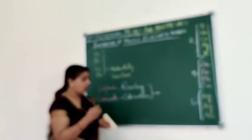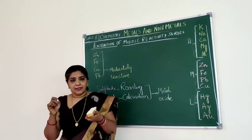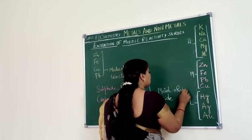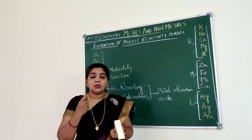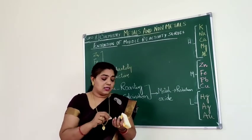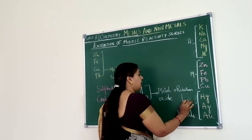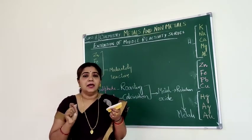After roasting and calcination, what do we get? We get the metal oxide — whichever ore we have taken, we get the oxide of that metal. After that, the metal oxide should be subjected to a reduction reaction using a suitable reducing agent, and from that, the metals are isolated.